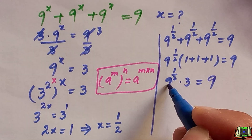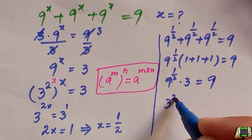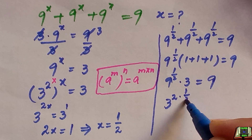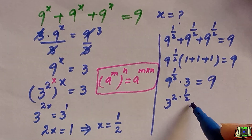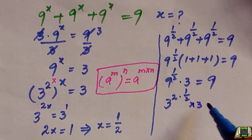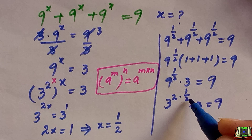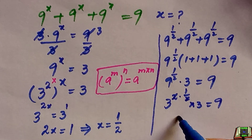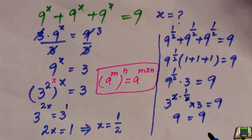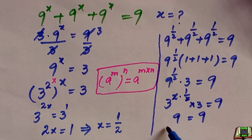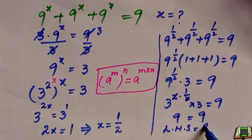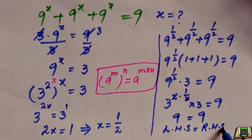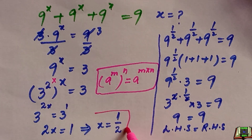We can write 9 as 3 raised to power 2, times 1/2, times 3. The 2 and 2 cancel out, leaving 3 times 3, which equals 9. So the left hand side equals 9. This confirms that x is equal to 1 over 2 is the correct answer.